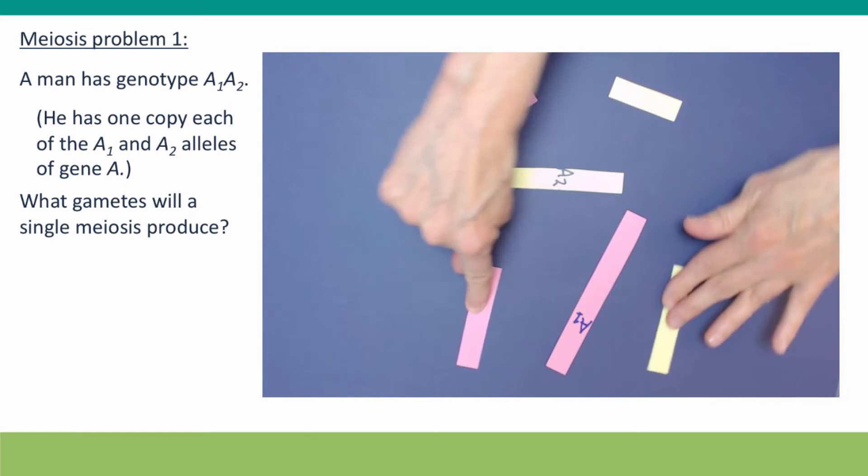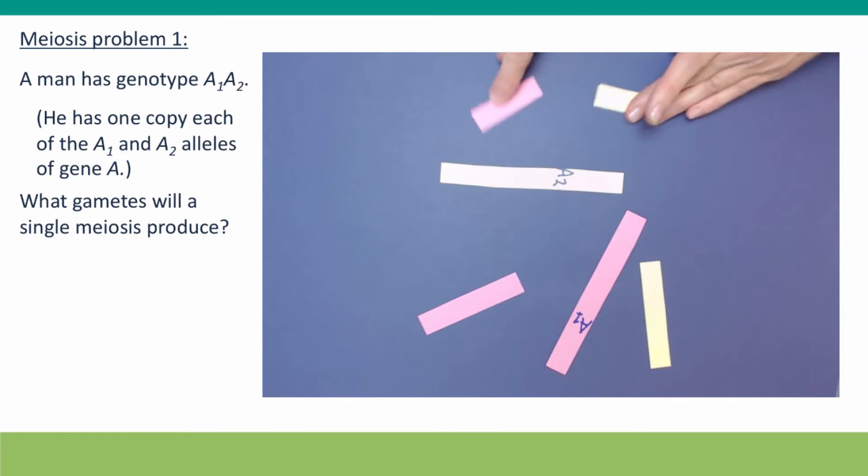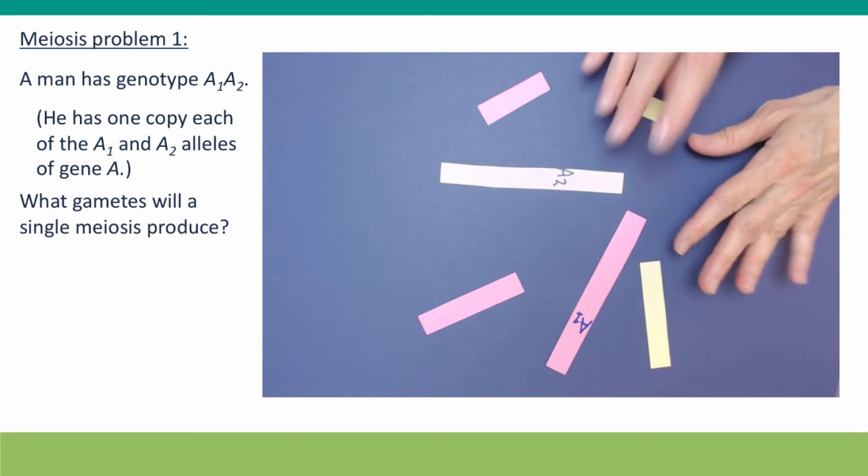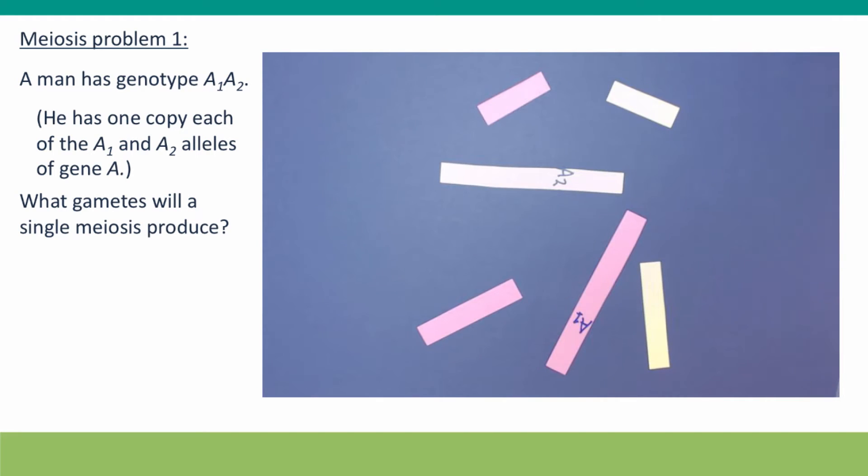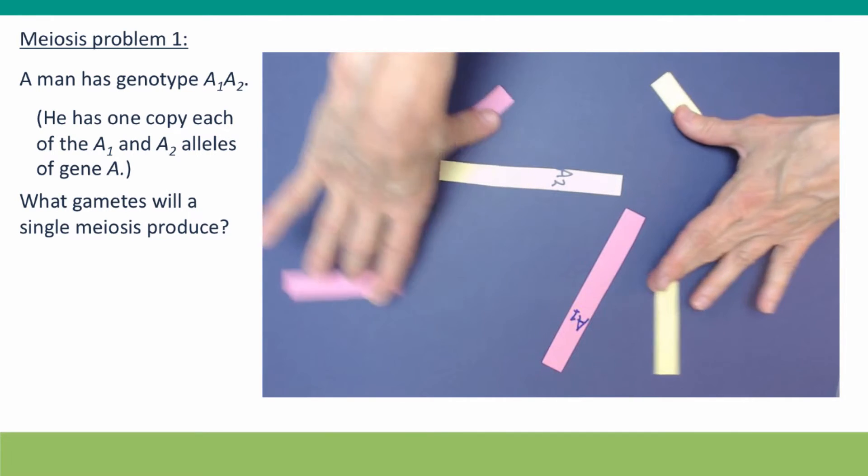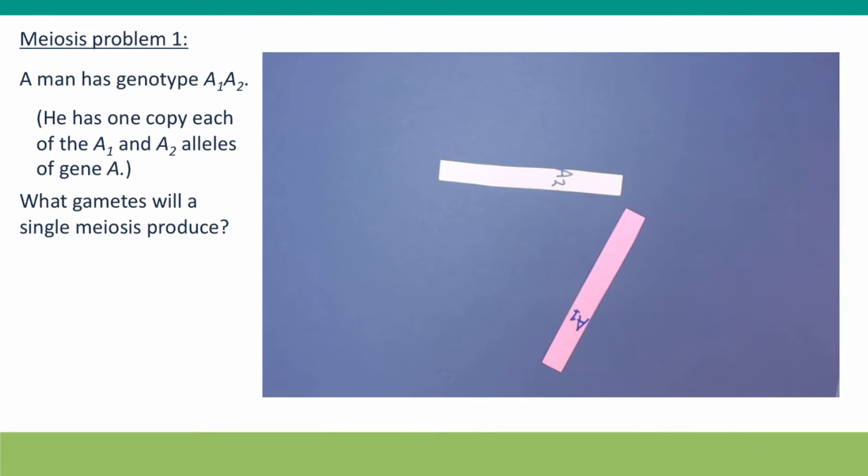I've also included homologues of a medium sized chromosome and of a short chromosome. But because we don't know anything about the genes on these other chromosomes, there's no need to pay attention to them. They're not going to influence what happens with this chromosome, so we can simply remove them from the picture.